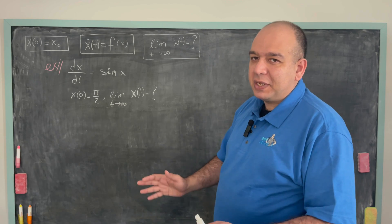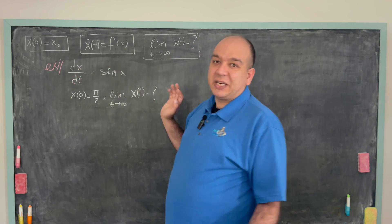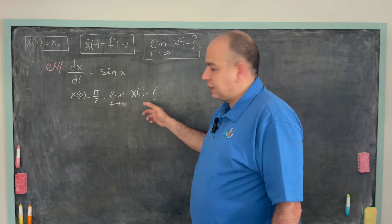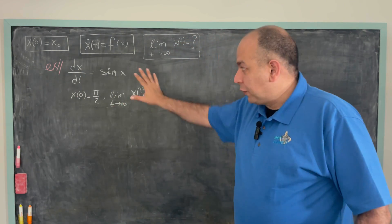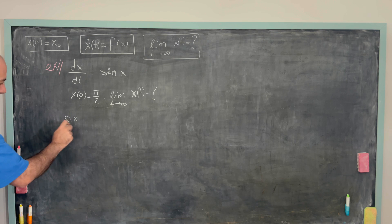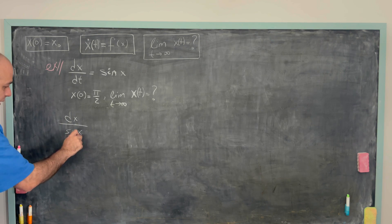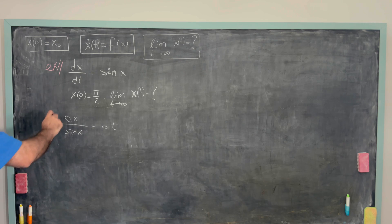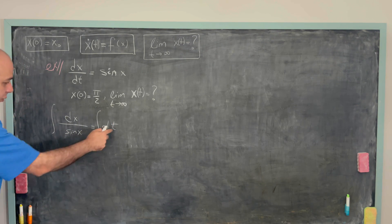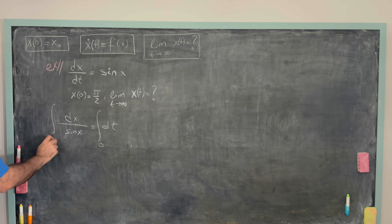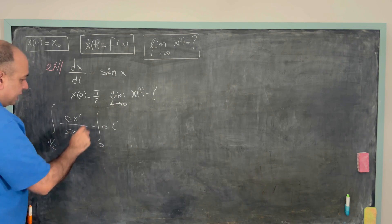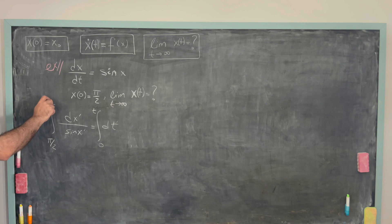The very first thing we can do is integrate. If we can find x as a function of t, we just take the limit. So dx/dt = sin x means we write dx/sin x = dt, and integrate both sides. When t = 0, x = π/2. Using dummy variables x' and t', the left integral runs from π/2 to x, and the right integral from 0 to t.